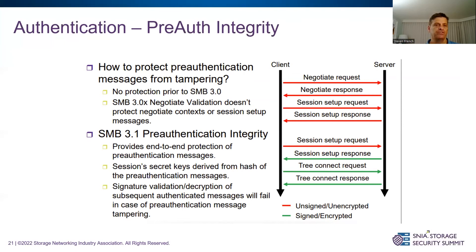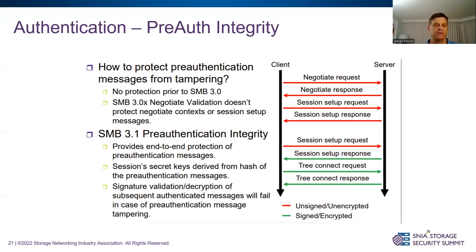Next question: once we've authenticated, how do we make sure there's no man-in-the-middle that changed the OIDs the server was requesting? We have pre-auth integrity checking. Prior to SMB3, there was no good way to do this. SMB3 added negotiate validation, but SMB 3.11 has much stronger pre-auth integrity — the whole sequence of commands up to the tree connect is checked to make sure they weren't tampered with. From tree connect onward, messages are either signed or encrypted.